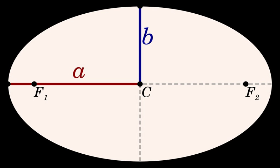The semi-minor axis and the semi-major axis are related through the eccentricity, as follows: b = a√(e² − 1).